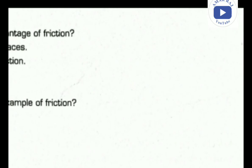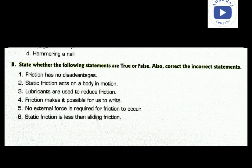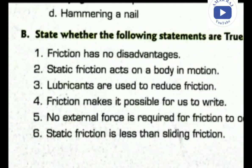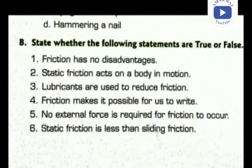Now see the next section: state whether the following statements are true or false, and correct any incorrect statements. Statement one: friction has no disadvantages. This is false — friction does have some disadvantages. You should write 'some' or 'many' in place of 'no.'